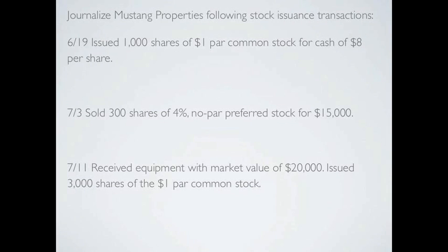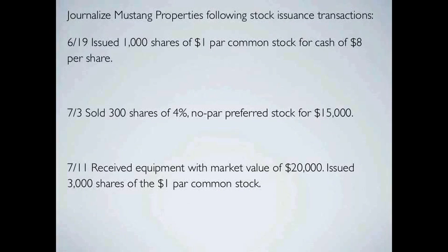Let's journalize Mustang Properties' stock issuance transactions. On June 19th, they issued a thousand shares of one dollar par common stock for cash of eight dollars per share. We're issuing a thousand shares set at a dollar par value, but selling them for eight dollars per share. So how much cash are we getting? We're getting eight thousand dollars in cash because we're selling a thousand shares at eight dollars apiece.